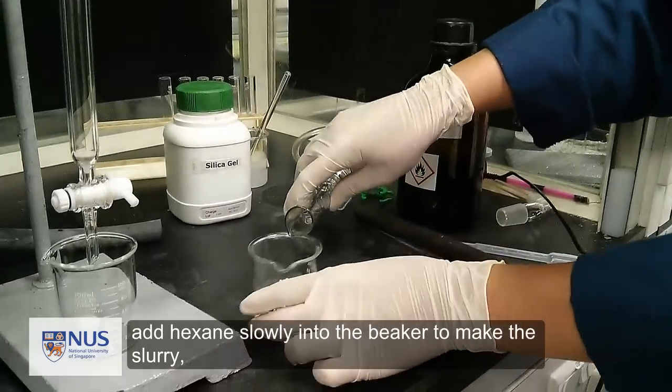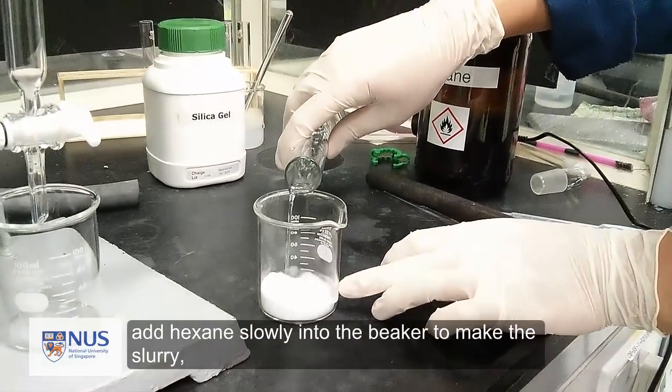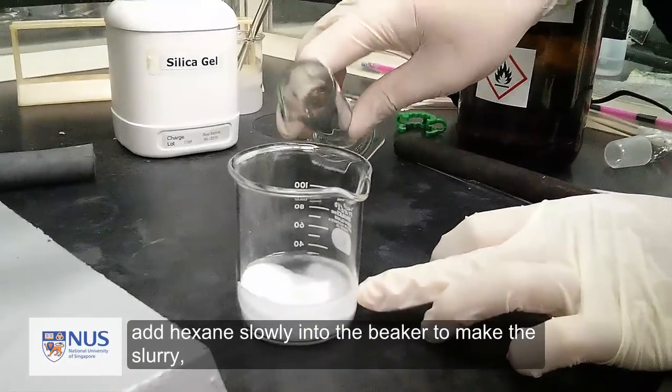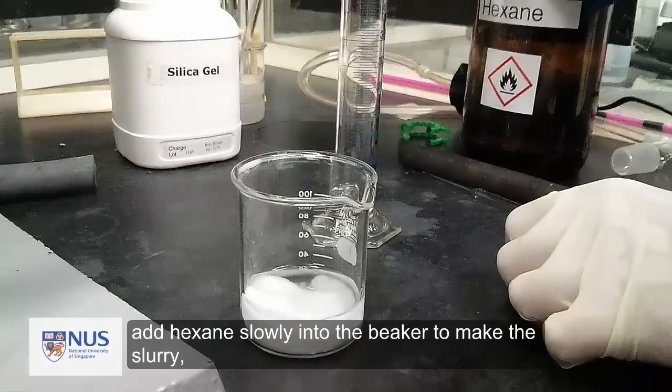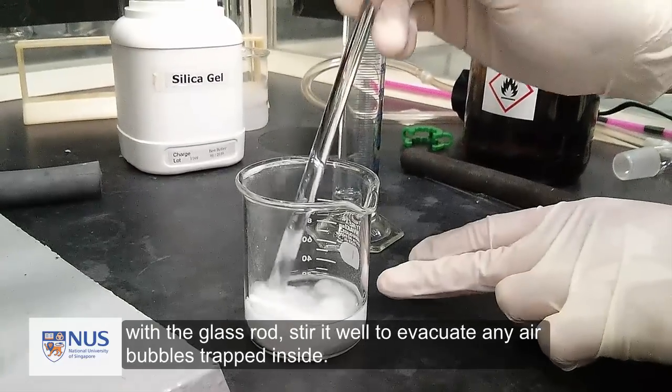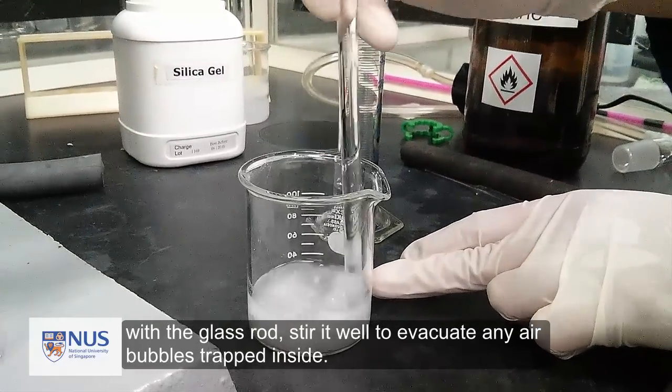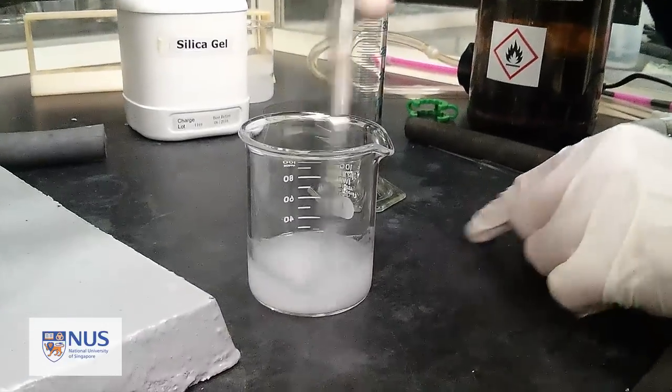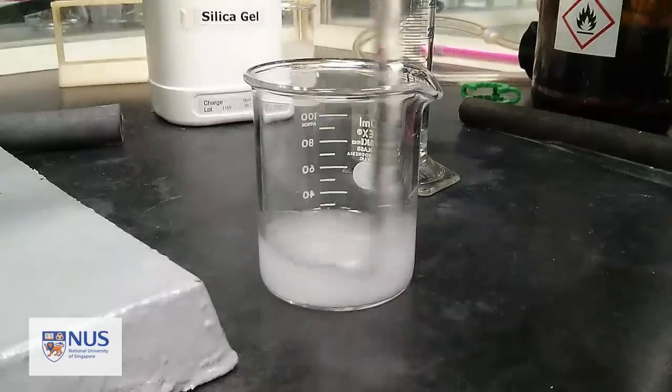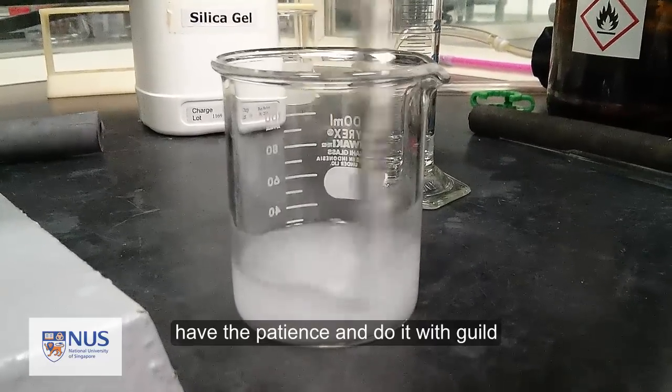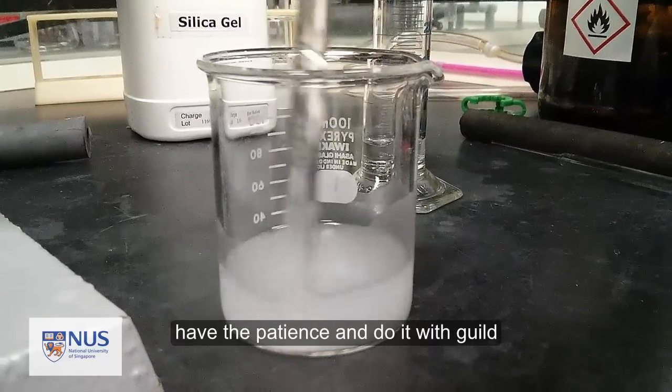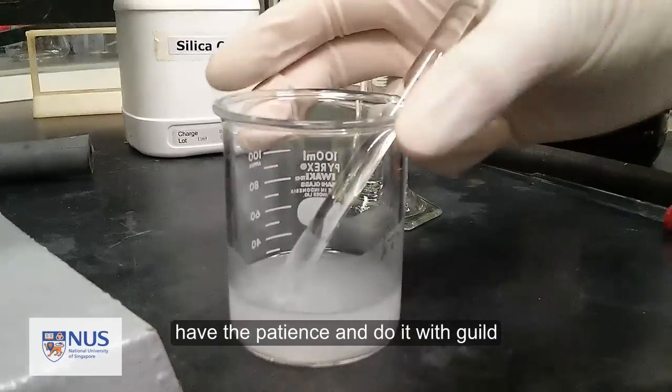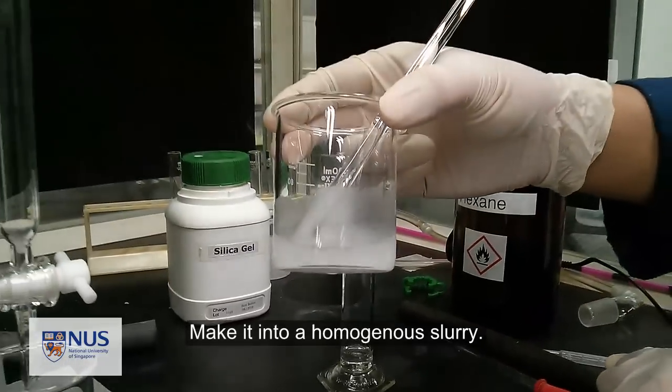Add hexane slowly into the beaker to make the slurry. With the glass rod, stir it well to evacuate any air bubbles trapped inside. Make it into a homogeneous slurry.